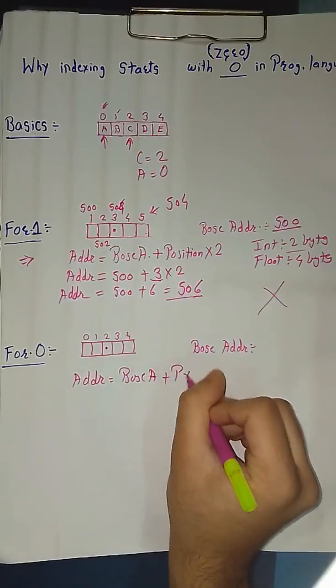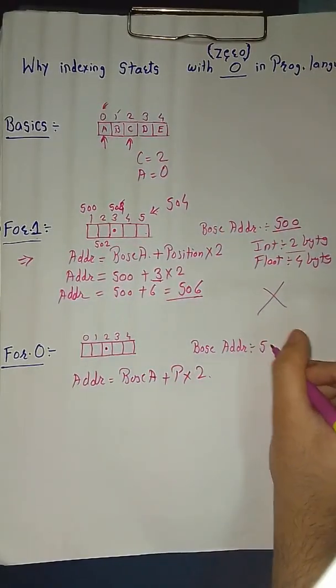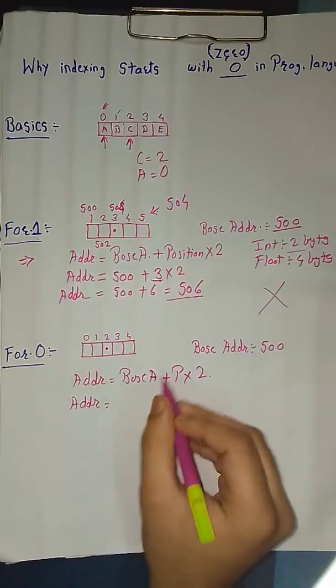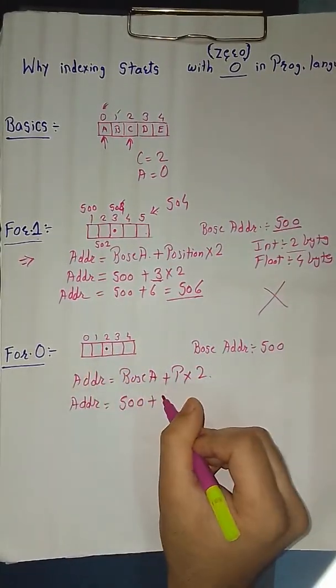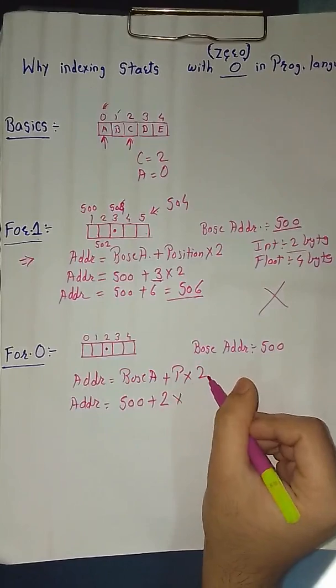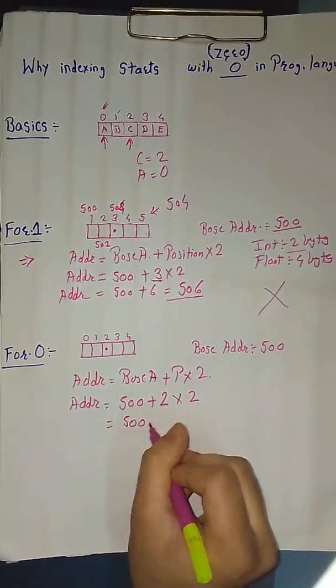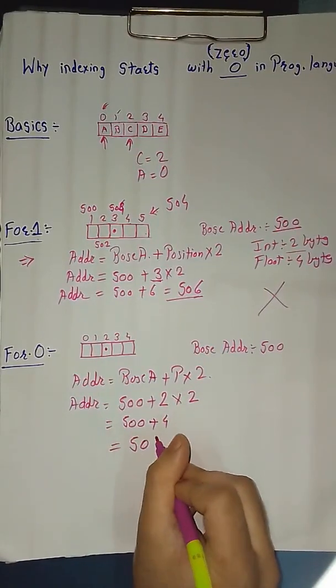Let's do the formula. Address is equal to base address plus position into 2. Integer size means 2. We have taken the base address as 500 here also. Now address equals base address 500 plus position 2 into the integer value 2. So this comes as 500 plus 4 equals 504.